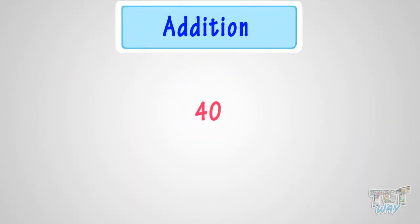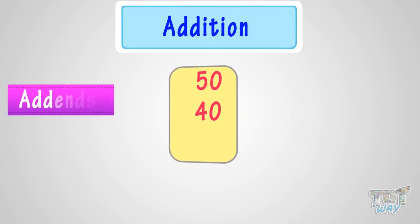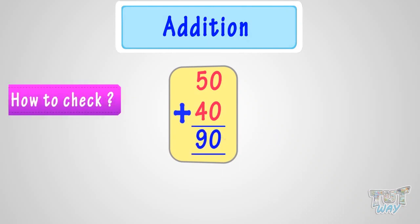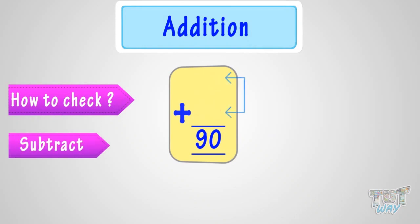Here is an addition problem. 40 and 50 are our addends. Solving this, we get the sum — it's 90. Now, to check whether the answer 90 is correct or not, you have to subtract any one of the addends from the sum, and if you get the other addend, the sum is correct.